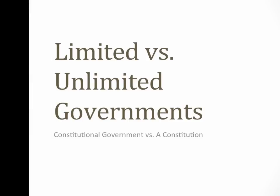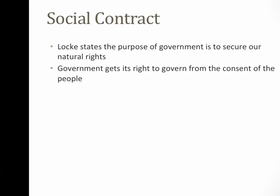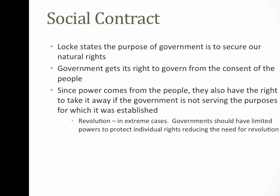This is going to be the final video of this particular section, and it's limited versus unlimited government. We're going to look at the difference between a constitutional government and a government that has a constitution — two different things. Just a little review: social contract. John Locke stated the purpose of government was to secure our natural rights, and that government gets its right to govern from the consent of the governed, which is the people. The people are the source of power, and since power comes from the people, they also have the right to take it away if the government is not serving the purposes for which it was established.